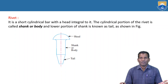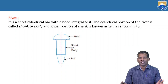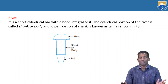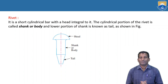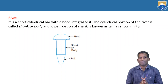So first of all, what do you mean by fastenings and how do you classify the fastenings? Actually, two types of fastenings are there: one is permanent type of joints fastenings and the second one is temporary type joints. Fastenings are classified into two types: permanent type of fastenings and temporary fastenings.